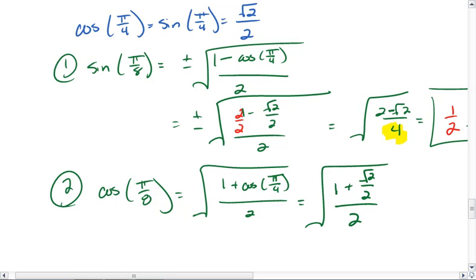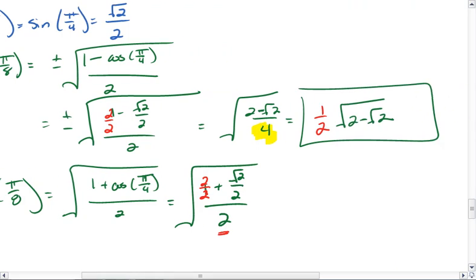Remember, again, we can change this 1 to a 2 over 2, so that we can divide by this 2 in the denominator, which gives us 2 plus root 2 all over 4.